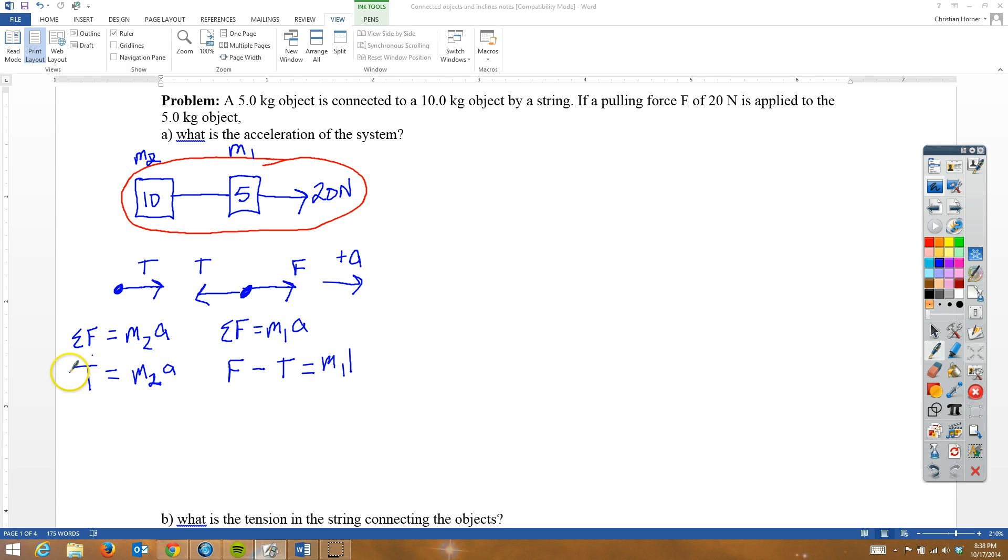Now, the nice thing about this is because we know what tension is, it's M2A, we can actually plug it into this equation. So this is M1A, and we're going to say that F minus M2A is equal to M1A. My pen's not behaving very well. And at this point, what we want to do is we want to try to get the A's on the same side. So to do that, we're going to say F is equal to M1A plus M2A. And now we can go ahead and pull out our A. So we're going to say F is equal to A times M1 plus M2.